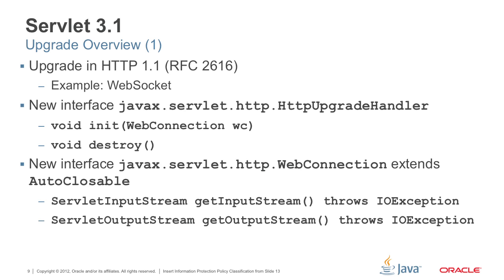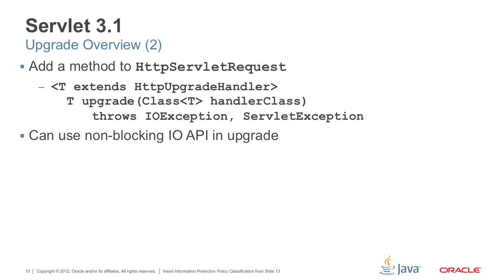Having defined the upgrade handler and the WebConnection, the next step is to associate this upgrade handler with the given HttpServletRequest. We add an API called upgrade, which takes the class of HttpUpgradeHandler as its argument. This has the advantage of letting the container create the handler for you, so that the container can do dependency injection if necessary, allowing you to take advantage of CDI. You can also use non-blocking I/O inside the upgrade handler.